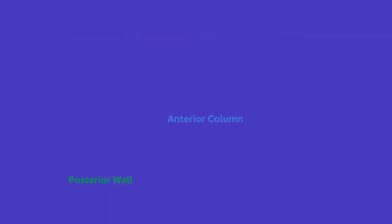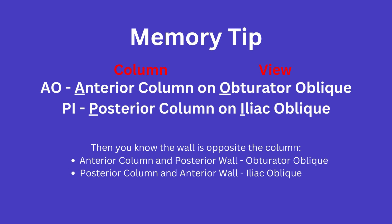Before I end this concise video, I wanted to give you a quick way to remember the key association between the Judet views and which column is best appreciated. As you progress through your career, you won't need this, but when starting out, a memory aid can make all the difference. Just think of AO and PI: the anterior column is best seen on the obturator oblique view, and the posterior column on the iliac oblique view. Beyond this, remember that the walls are opposite — so on the obturator oblique view, you appreciate the anterior column and the posterior wall.